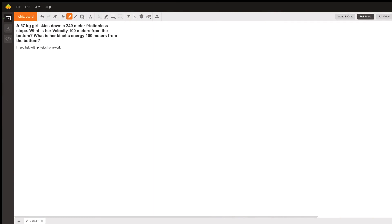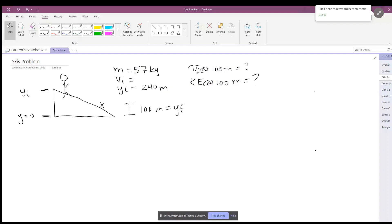We're going to do a physics problem about a skier who is going down a frictionless slope. I'm going to share my screen and we are going to come over to what I have set up.